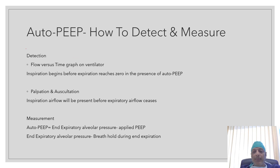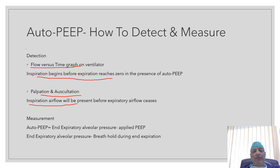How do we detect the presence of auto PEEP? We can do it by looking at the flow versus time graph on the ventilator. In the presence of auto PEEP, inspiration will begin before the expiration reaches zero, or before expiration touches the baseline. Another method to detect auto PEEP is by palpation and auscultation — in this case, you will find that inspiratory airflow will be present before cessation of expiratory airflow.